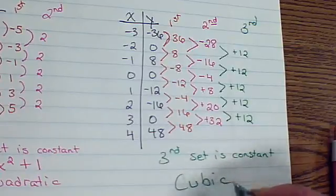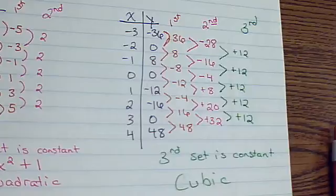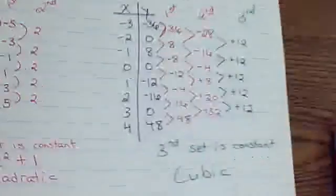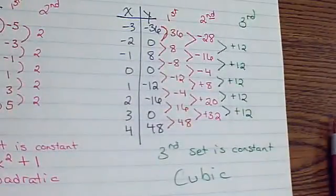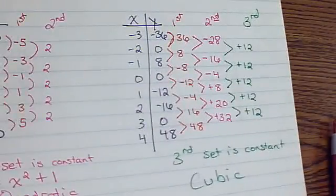And this is actually the cubic from the very first example. It's a lot easier to guess the equation when you know where your zeros are, and also to figure out what kind of polynomial you have. But finite differences is a nice tool to make sure you're on the right track.